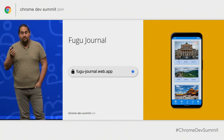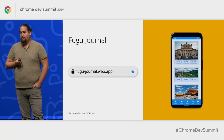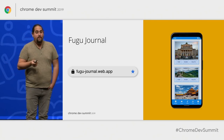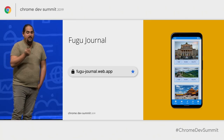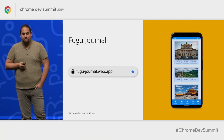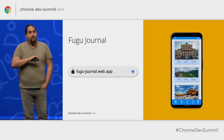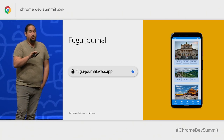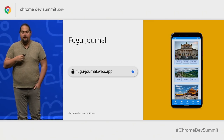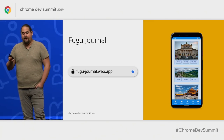Go try it yourself. On your Android device, go to fugujournal.web.app, add it to your home screen, and try out everything — inviting friends, adding content, and sharing it out. While the Contacts API isn't fully launched yet, I've enabled an origin trial on Fugu Journal so you can see how it works without a special version of Chrome or toggling any Chrome flags.